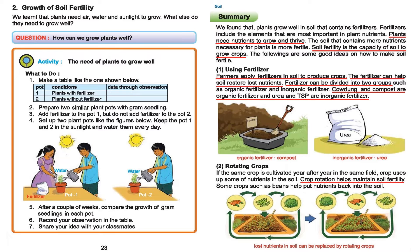Option two is rotating crops. If the same crop is cultivated year after year in the same field, it uses up some of the nutrients in the soil. Crop rotation helps maintain soil fertility. Some crops such as beans help put nutrients back in the soil. If we grow different kinds of vegetables or crops in a single land, the rotation will provide more nutrients. For example, after growing carrots, then beans, then cabbage, we start the next cycle with cabbage, then carrot, then bean — this makes the land more fertile.